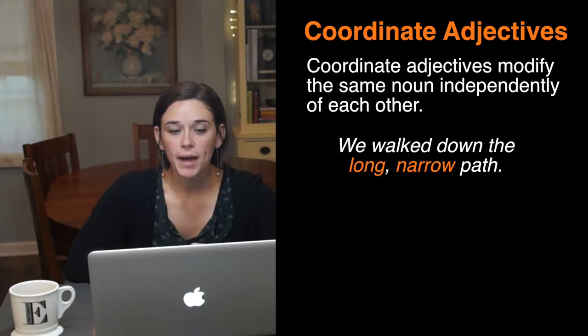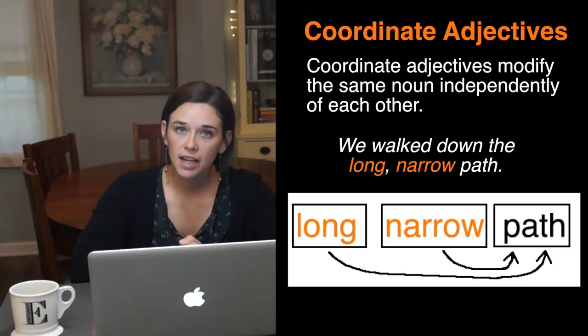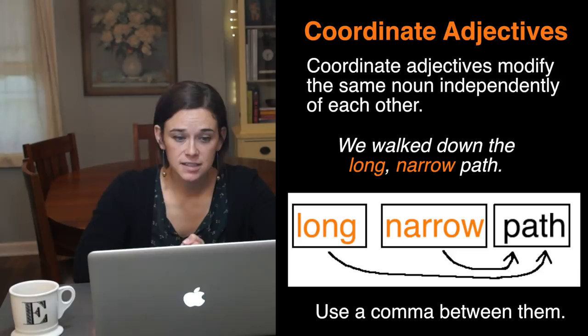So in the sentence, we walked down the long narrow path, the adjective long is modifying the noun path, and the adjective narrow is modifying the noun path. If adjectives are coordinate, like this, you need a comma between them or the word and.